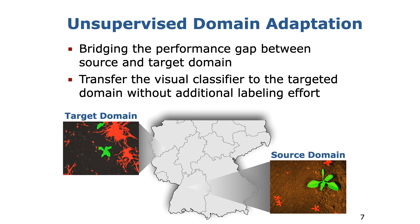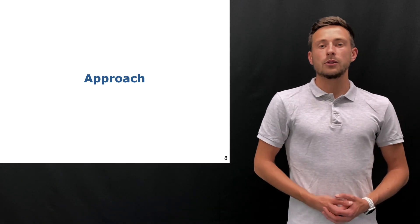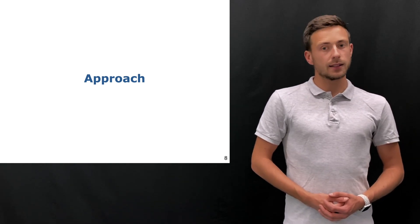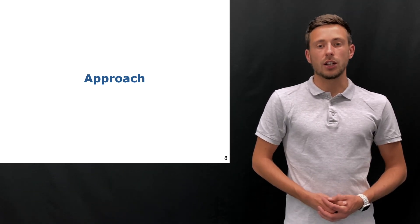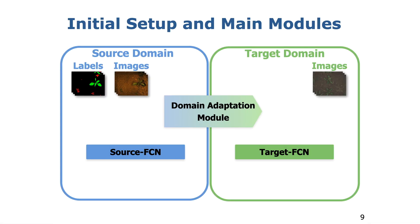In this paper we aim at bridging the performance gap in visual crop and weed classification through transferring the visual classifier to the targeted domain without the need for an additional labeling effort. We target unsupervised domain adaptation towards an approach that enables us to train an FCN with suitable performance on the target domain while exploiting labels only from the source domain.